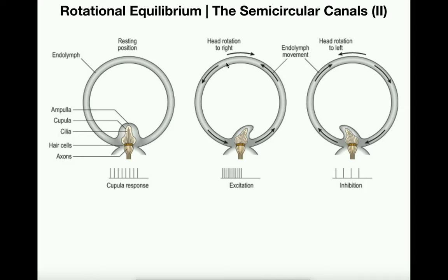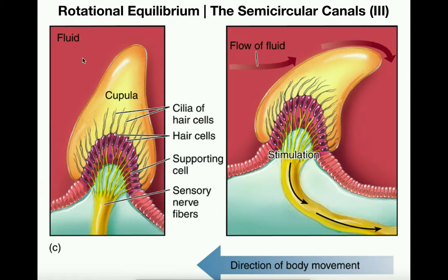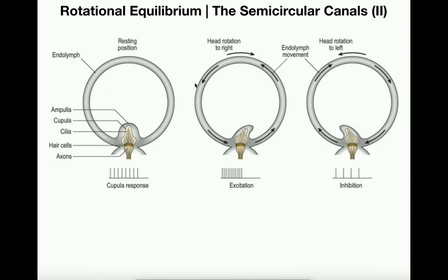If we rotate the head to the right — looking toward your right — there is an acceleration that's detected. Whenever you rotate your head to the right, the endolymph, this fluid right here in red, is going to move in the opposite direction. Notice what happens: it moves the cupula toward the right, and that's going to translate to excitation.